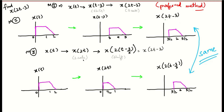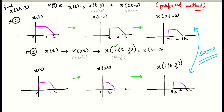In method 2, we scale first instead of shifting first. We need to replace t by some amount of shift. If we replace t by t minus 3 here, we get x(2t minus 6), which is something we don't want — we want x(2t minus 3). So instead of shifting by 3, we shift by 3/2, adjusting because it gets multiplied by 2 on the outside. So we end up getting x(2t minus 3). If we compare the two signals, they are both the same — the approach is different but the final answer remains the same. This method is slightly tricky, so the first method — shifting first, then scaling — is usually preferred.